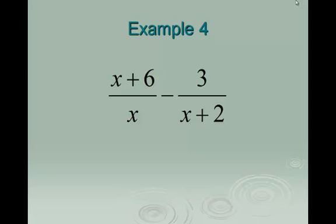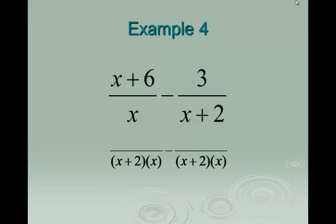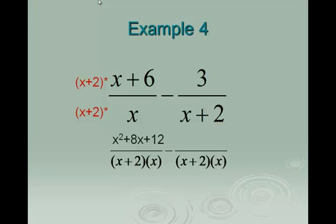On the next example, our common denominator is again the product of both factors: x plus 2 times x. It is not just x plus 2, and it is not x squared plus 2 — it is both factors multiplied together. The factor missing on the first fraction is x plus 2. When I multiply the first fraction by x plus 2, I have to FOIL the top: x times x is x squared, x times 6 is 6x, 2 times x is 2x, and 2 times 6 is 12. Combining gives x squared plus 8x plus 12.